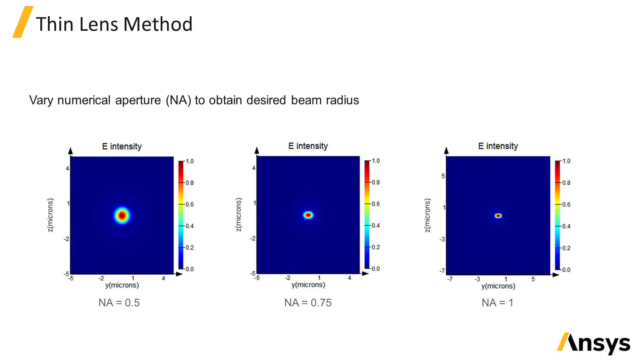The beam waist size is not one of the input parameters that you can specify when using the thin lens method. So to generate a beam with a given beam waist radius, you can set the distance from focus property to zero to calculate the field profile at the focal plane.